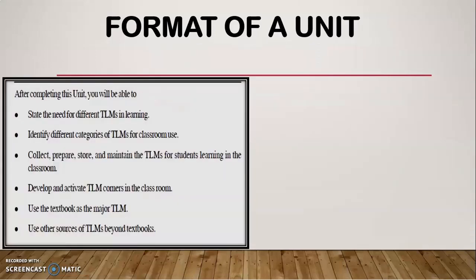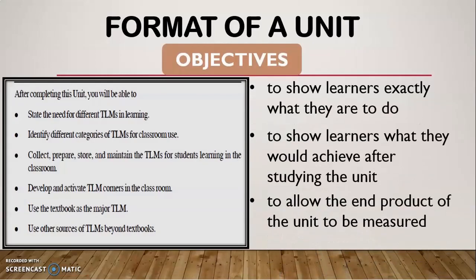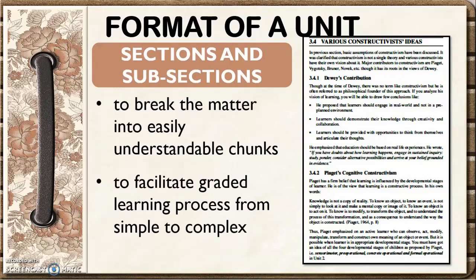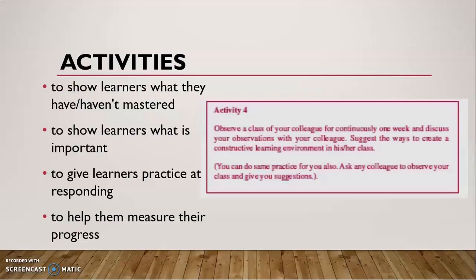The next section is objectives or learning outcomes. In every unit we write certain objectives — they help you know exactly what you have to do, what you would achieve after studying the unit, and what the end product will be that is measured or assessed. Each unit has certain sections and subsections. We break the matter into easily understandable small chunks to facilitate a graded learning process from simple to complex. Activities basically show learners what they have or have not mastered, what is important, and give an opportunity to practice.